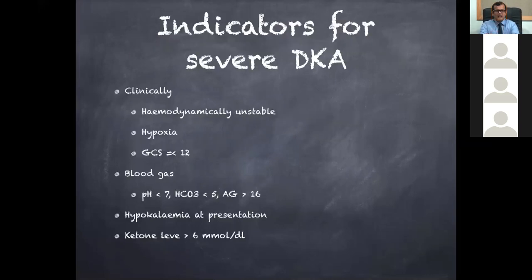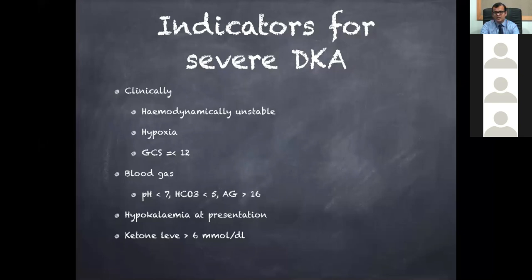Once we identify DKA, we assess severity. Clinically: is the patient hemodynamically stable, hypoxic, or is GCS less than 12? On blood gas: pH less than 7.0, bicarbonate less than 5, or anion gap more than 16 indicate severe DKA. If capillary ketone bodies can be checked, a level more than 6 also indicates severe DKA.